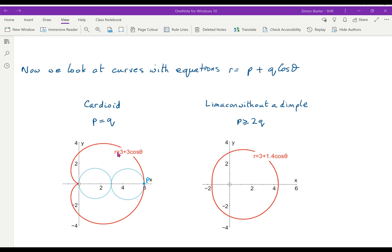When theta is 0, I get r is 6. As theta goes from 0 to pi by 2, cos theta decreases to 0. So r is 3. And then coming down here, cos theta becomes minus 1 when theta is pi. So this one is called the cardioid.